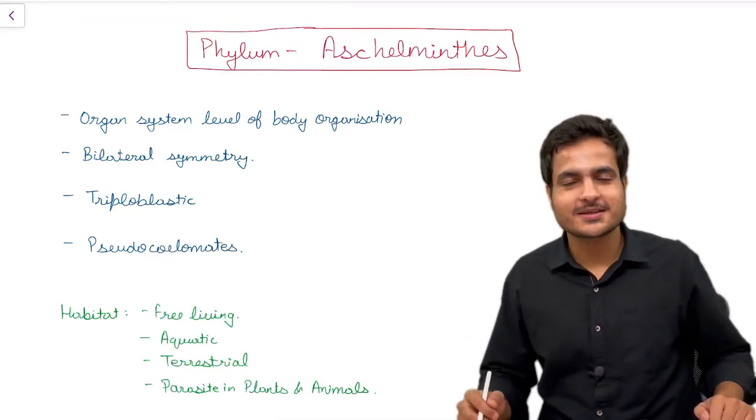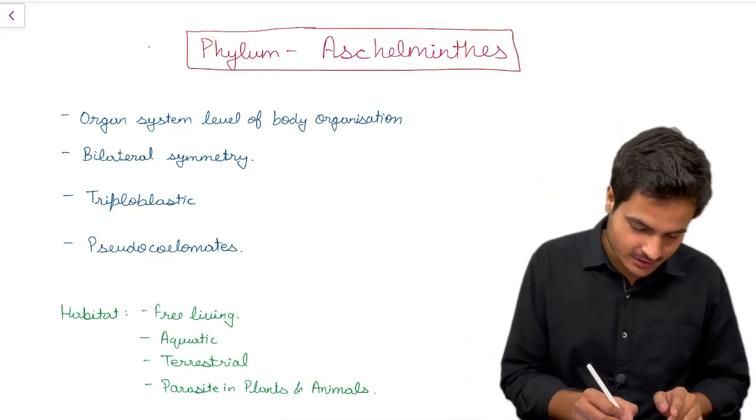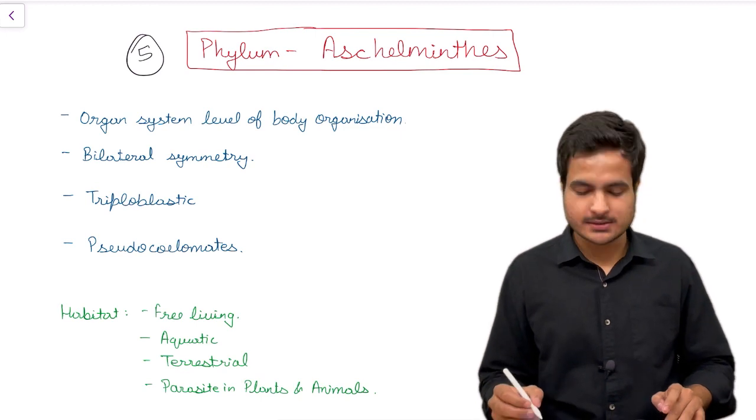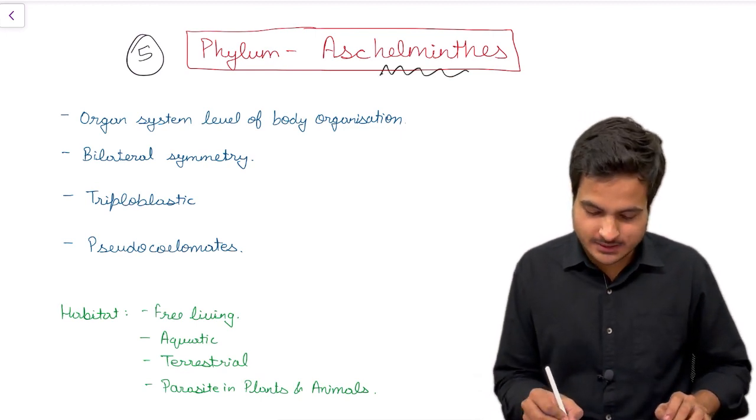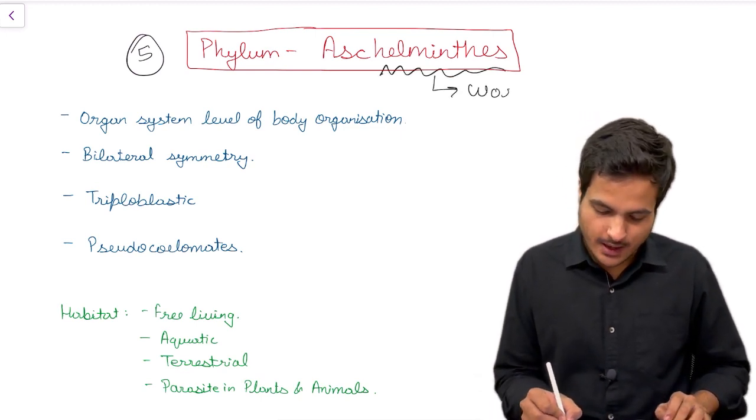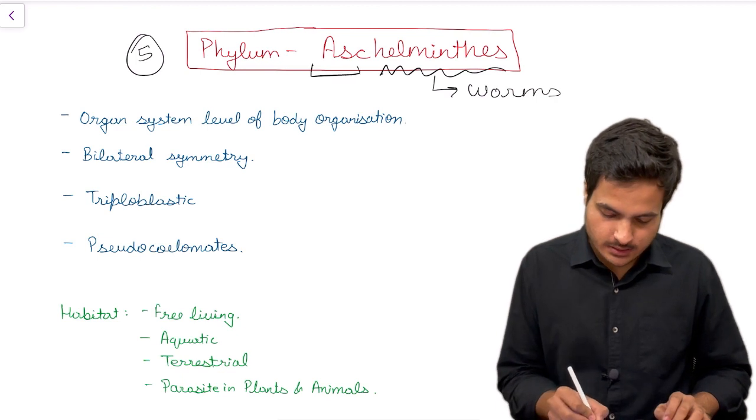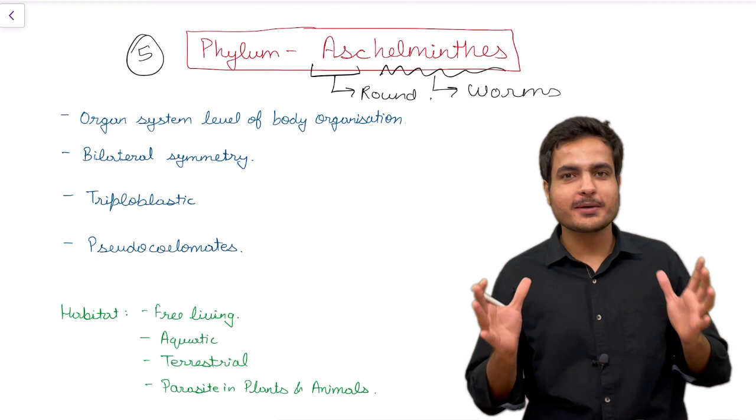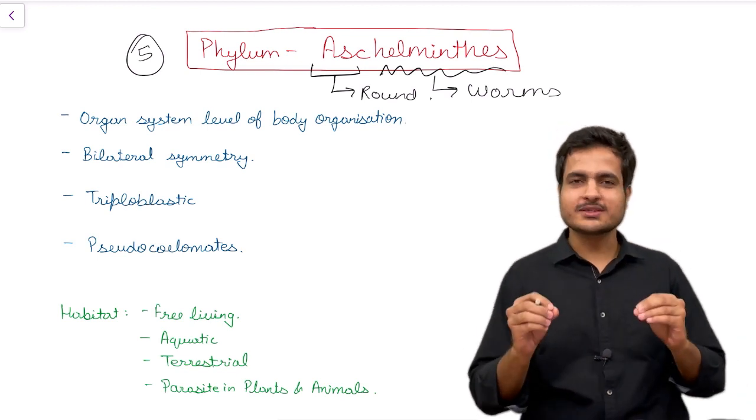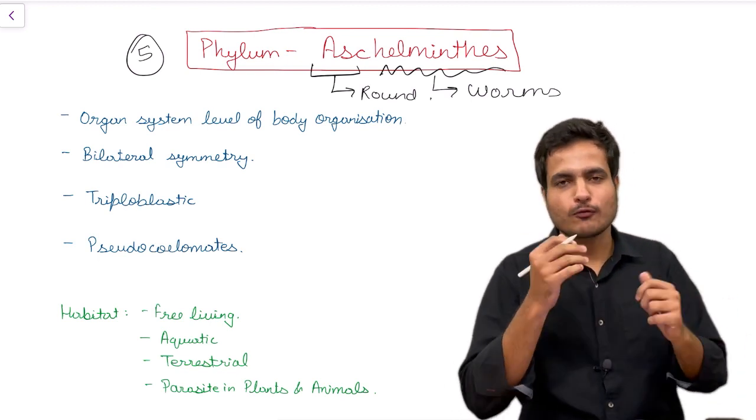Hello everyone, in this video we are discussing the fifth phylum of our discussion which is Aschelminthes. The word helminths means worms and asc means round. In this video we will be discussing everything which is mentioned in NCERT about roundworms.